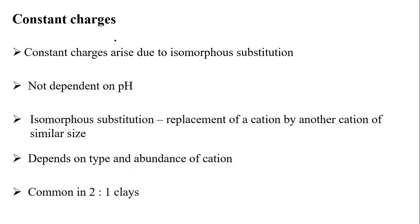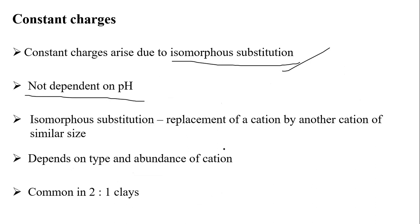Constant charge is permanent charge. This charge arises due to isomorphous substitution and is not dependent on pH. Isomorphous substitution is the replacement of one cation by another cation of similar size. This depends on the type and abundance of cations available. This type of constant or permanent charge due to isomorphous substitution is commonly observed in 2:1 type clays only.